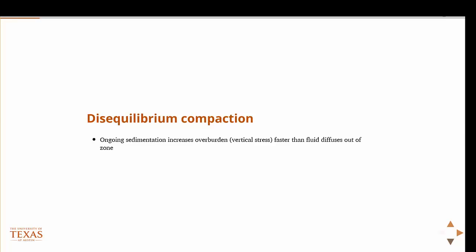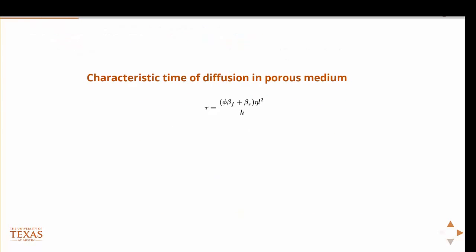So the time at which this occurs, the characteristic time at which this occurs, is given in Zoback. Right now we're in Chapter 2 of Zoback if you want to read along. The time at which this occurs, the characteristic time tau, Zoback lists this formula. He lists the formula like a lot of things in that book, but he doesn't tell you where it came from.